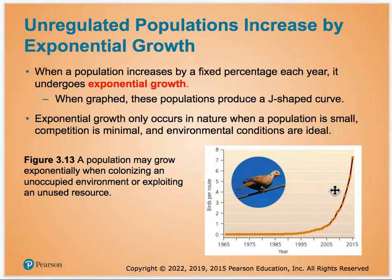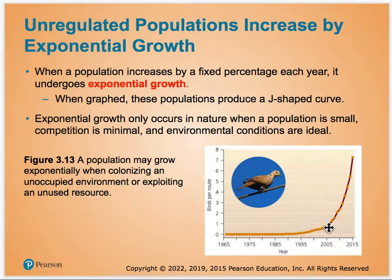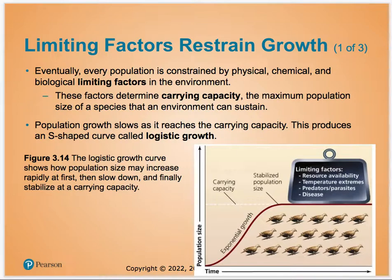There are factors that limit how much a population can grow. For example, a certain invasive dove was brought here and, without normal predators, it grew exponentially. Normally, with predators present, populations will reach what's called a carrying capacity — the environment can only hold a certain amount. Disease, parasites, and predators keep the population at a maximum, so it reaches a carrying capacity over time.